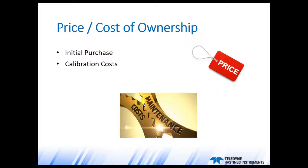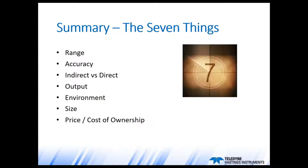The seventh thing to consider is price. In addition to the initial purchase, you will also want to find out about the cost of ownership. For example, if you're sending the gauge out every six months for calibration, those costs are going to add up over the years. Quick summary: here are the seven things to consider before selecting a vacuum gauge — range, accuracy, indirect versus direct, output, environment, size, and price and cost of ownership.